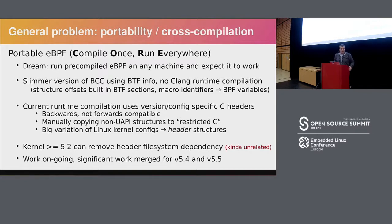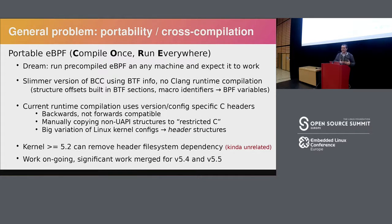You still require kernel headers to build the eBPF program because the type information describing the structures is in the headers. But starting with kernel 5.2, a change was made to include kernel headers inside the kernel as an archive, so when the eBPF program gets compiled, BCC can just access those kernel headers directly.